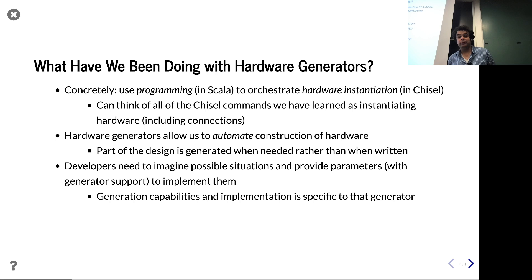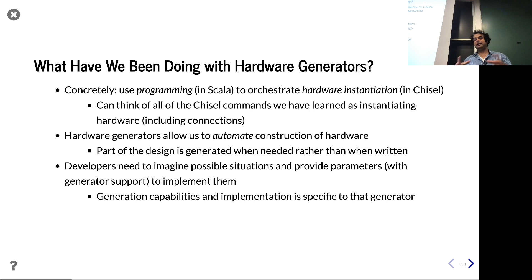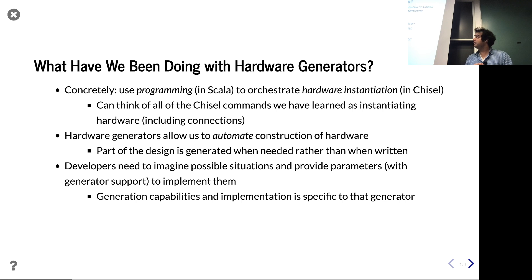Let's remind ourselves what we've been doing all quarter. In the last lecture's Chisel grab bag, I was trying to get folks excited about hardware construction — using programming in Scala to instantiate hardware. We're orchestrating the instantiation and connection of many different Chisel components. The whole point of a generator is to automate this construction process; it can make the same design every time, or take parameters and be more flexible.